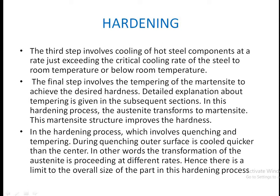In the hardening process, austenite transforms to martensite and this martensite structure improves the hardness. You must cool immediately — exceeding the critical cooling rate — to obtain martensite, which is the hardest structure. The hardening process involves quenching and tempering. Tempering will be covered in coming lectures; various tempering types such as post-tempering and mar-tempering have already been introduced in metallurgy.